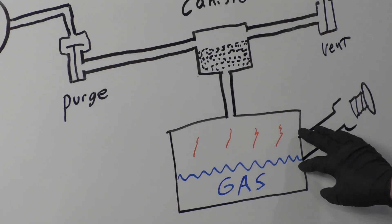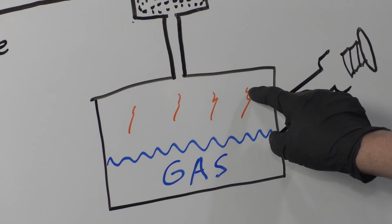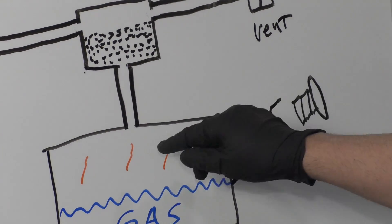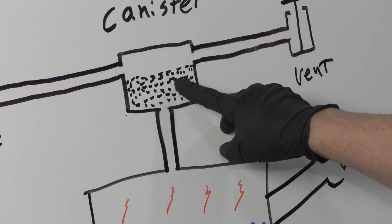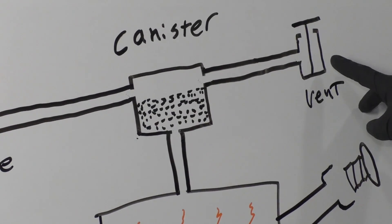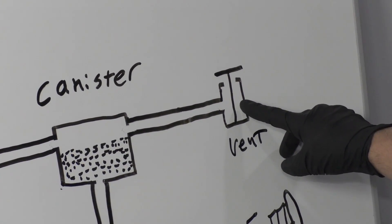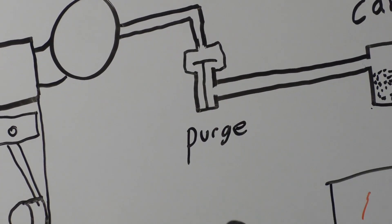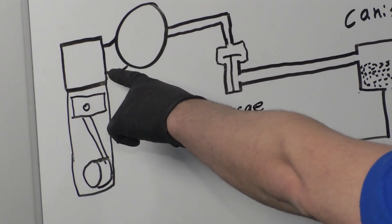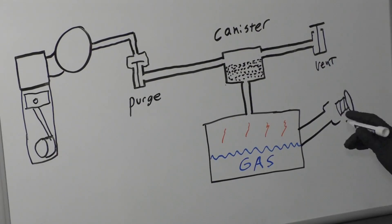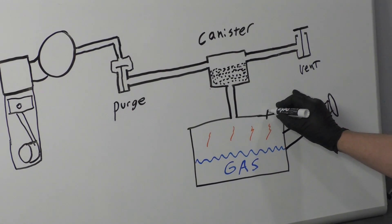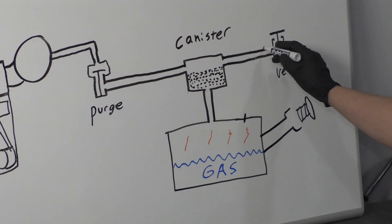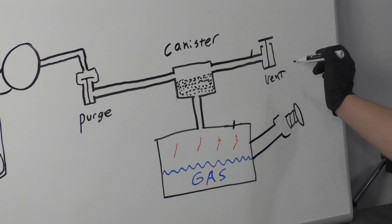You have the fuel tank and you have the fuel vapors. You have a gas cap, you have the EVAP canister, you have an EVAP vent, and you have a purge solenoid. This is where it connects to the engine on the intake side, and there may also be a pressure sensor in the fuel tank. Different vehicles have them in different places — sometimes they may be in the line or part of the vent.